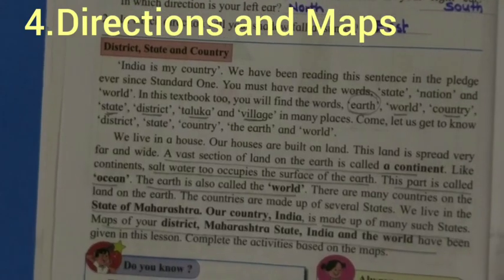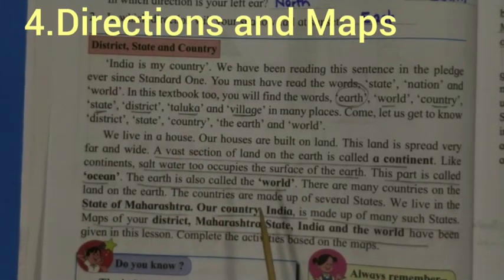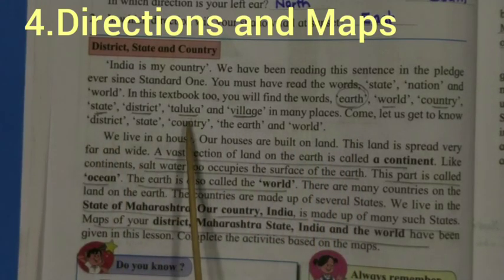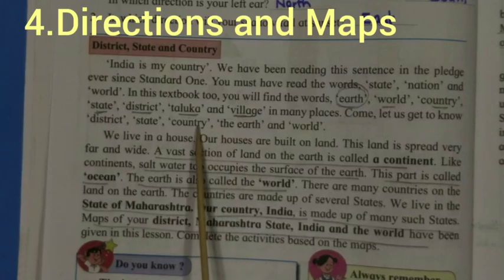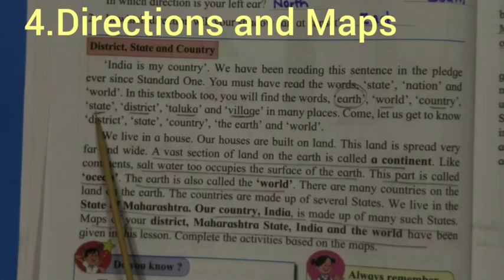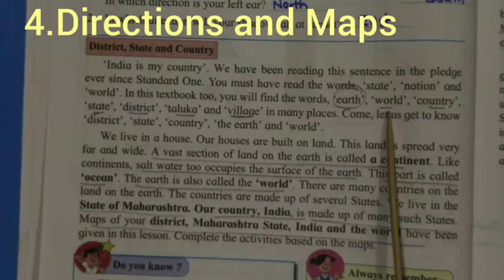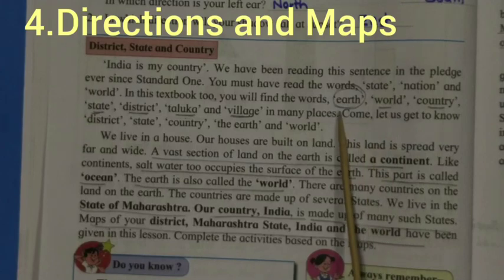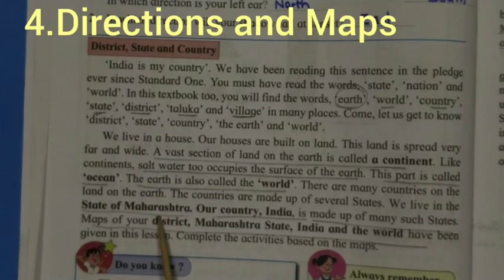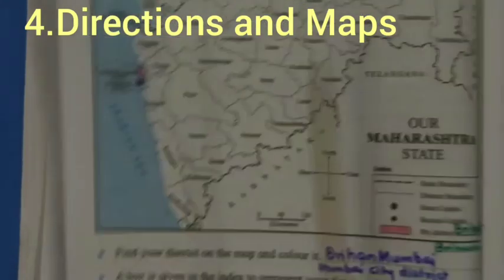You should know about your district, state, and country. Many small villages make talukas, many talukas make a district, many districts make a state, many states make a country, and many countries make the world — also called Earth. Our district is Mumbai, our state is Maharashtra, and our country is India.